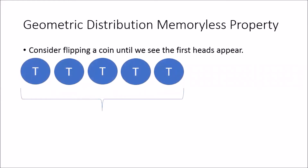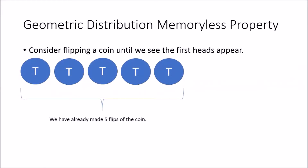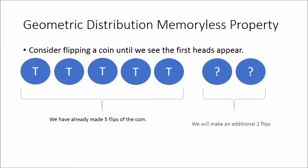Say that we've already made five flips, and each of these five flips have returned tails. So we haven't seen a heads yet, and assume that we're going to make another two flips, but we don't know what they will be — we will make an additional two flips.